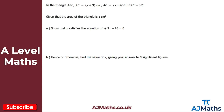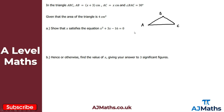For question one, we've been given triangle ABC. We know that AB = (x + 3) cm, AC = x cm, and angle BAC = 30°. We're also told the area of the triangle is 4 cm². We need to show that x satisfies the equation x² + 3x − 16 = 0. I'd recommend starting with a quick diagram to visualise the triangle ABC.